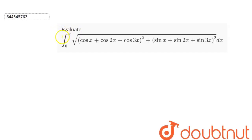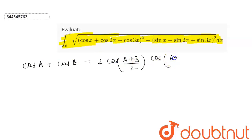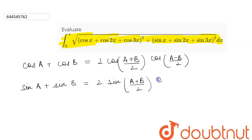The question is to evaluate the integration from 0 to π of the square root of (cosx + cos2x + cos3x)² plus (sinx + sin2x + sin3x)² dx. We have the formula: cos A + cos B = 2 cos((A+B)/2) · cos((A−B)/2), and sin A + sin B = 2 sin((A+B)/2) · cos((A−B)/2).